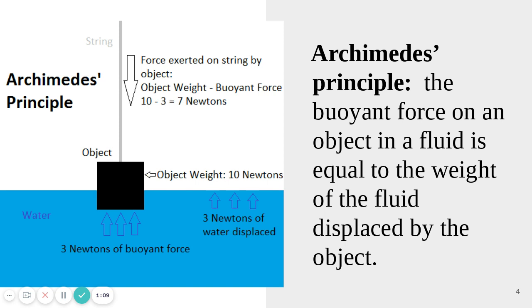Let's unpack what this means. If we take a two-by-four — this black box represents a two-by-four — and I put it out on a lake with smooth water, does it sit on the water with 99% of it above the water? No. Most of it is underneath. If I take a two-by-four and place it on water, it sinks down so that most of it is underneath the water. So let's take a look at what's going on as I put this black box into the water.